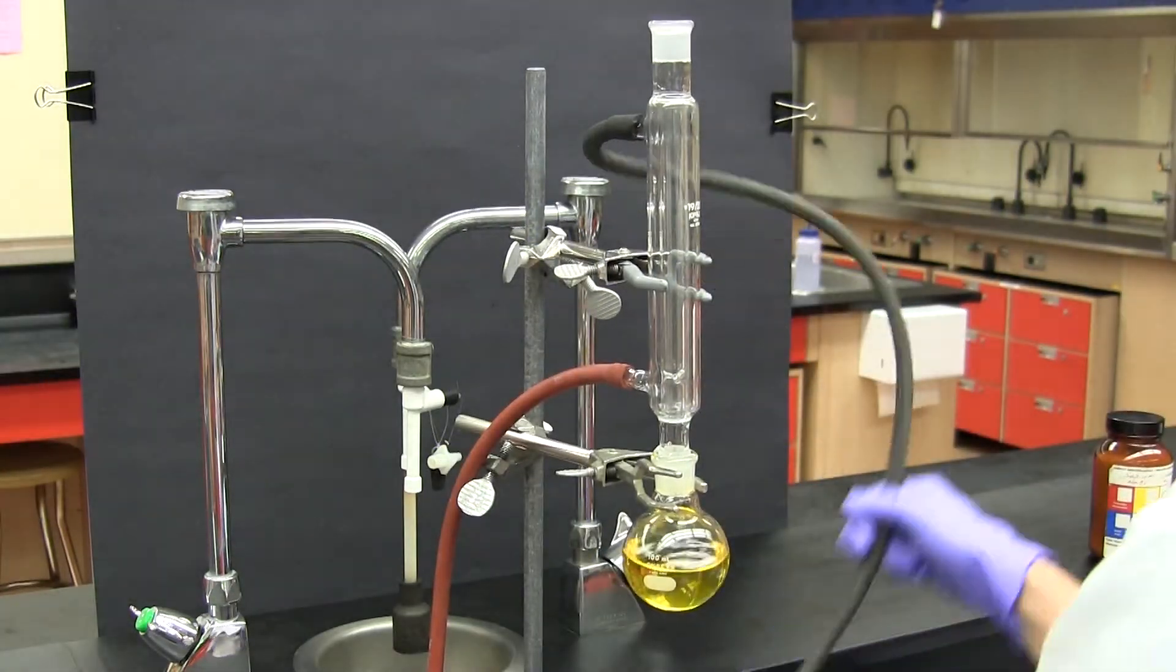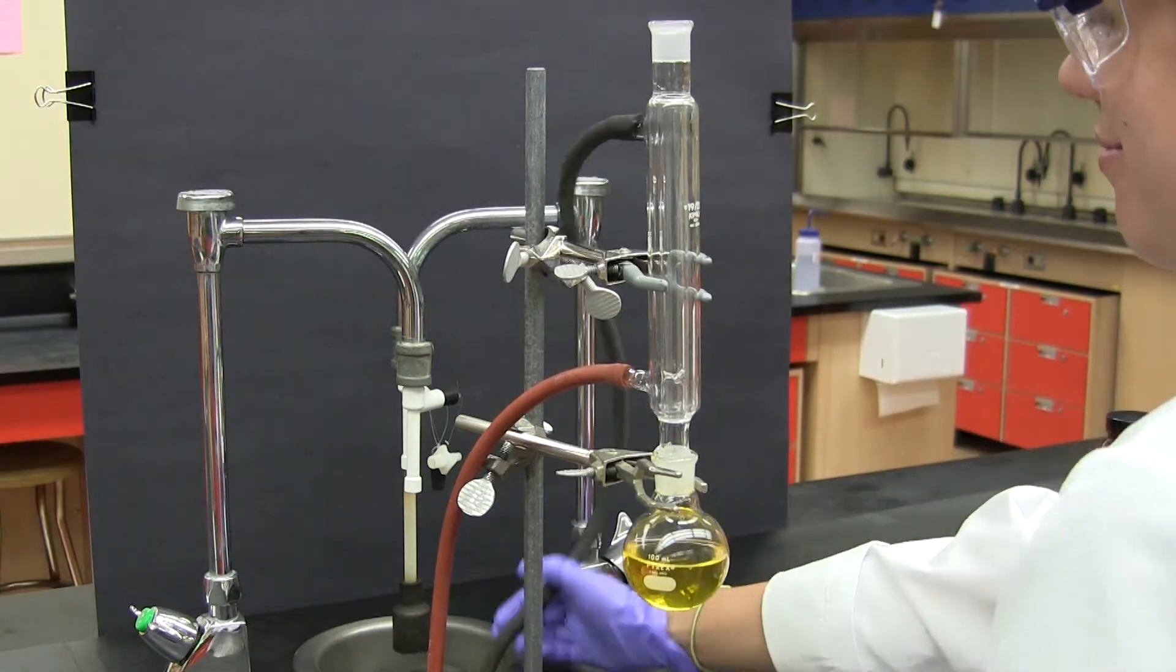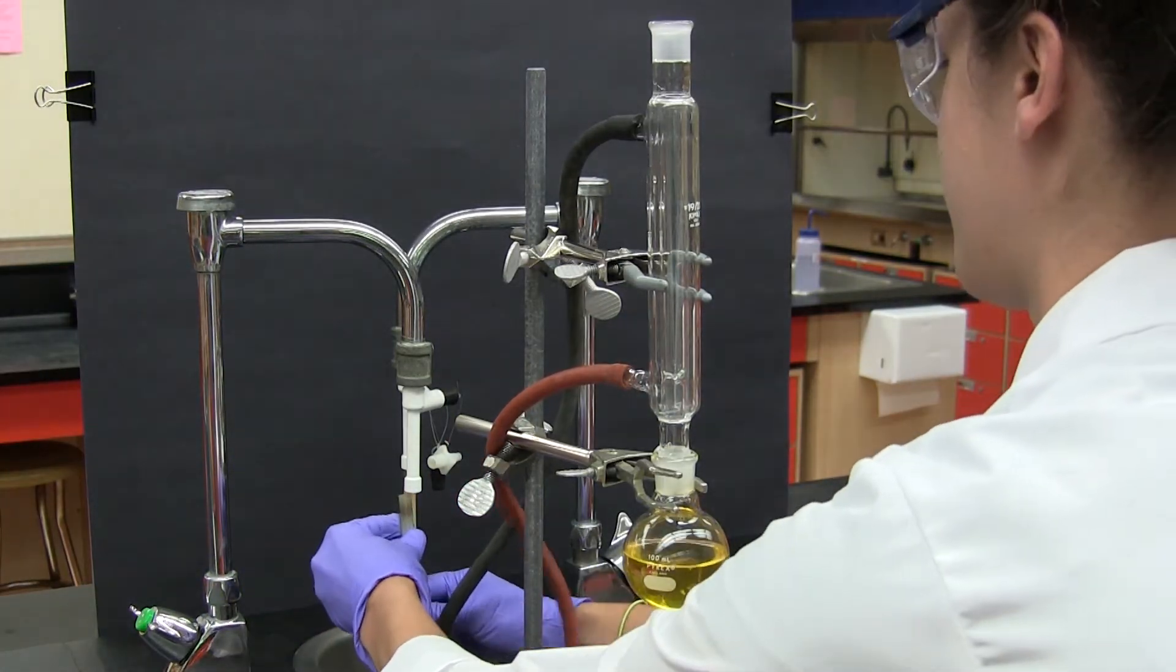The tubing from the top port of the condenser is directed toward the drain and the bottom port is attached with tubing to the water supply.